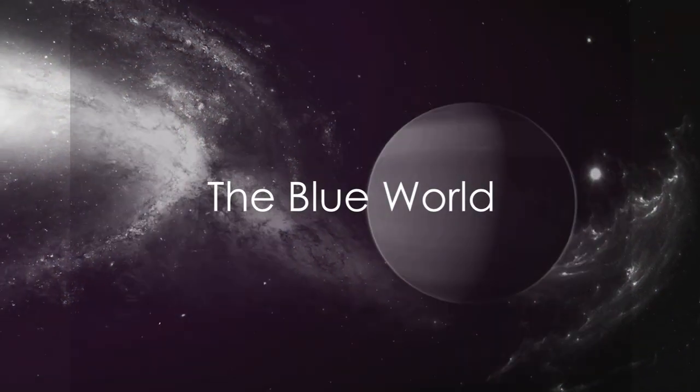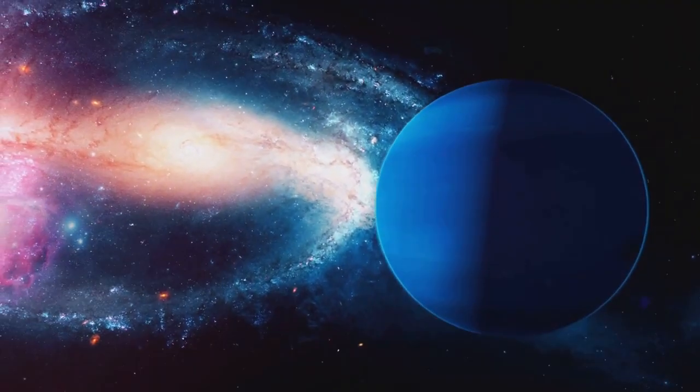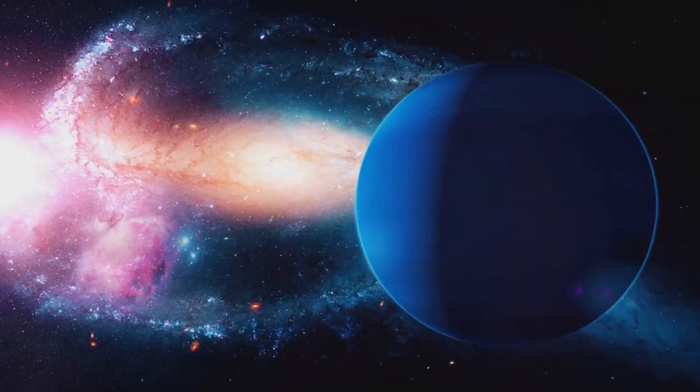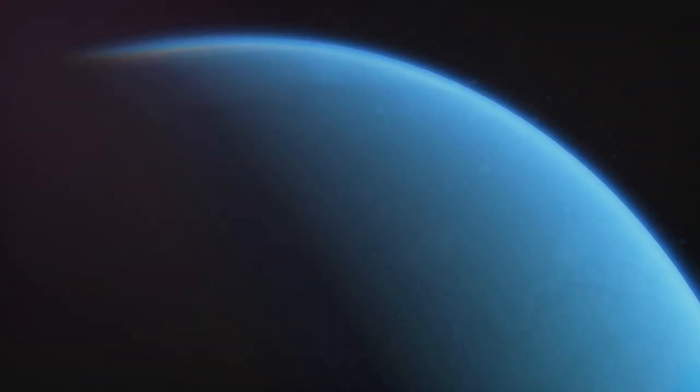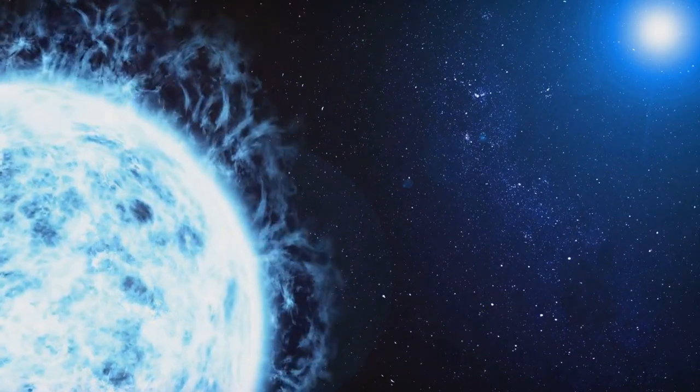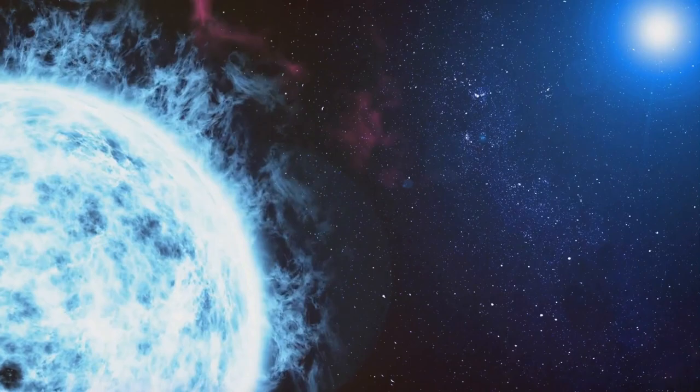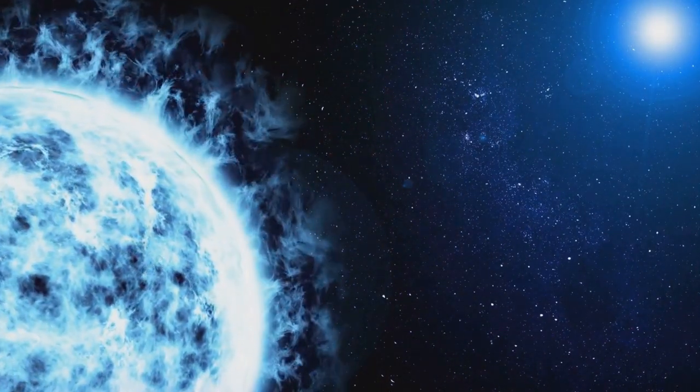Did you know Neptune has a distinctive blue color, unlike any other planet in our solar system? It's like a sapphire gemstone nestled in the velvet blackness of space. But what makes Neptune so blue? It all comes down to its atmospheric composition. Neptune's atmosphere is primarily made up of hydrogen and helium, much like the gas giants in our solar system. But it's the third component, methane, that's the real game-changer.